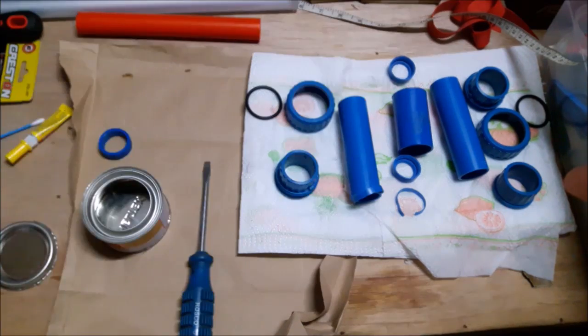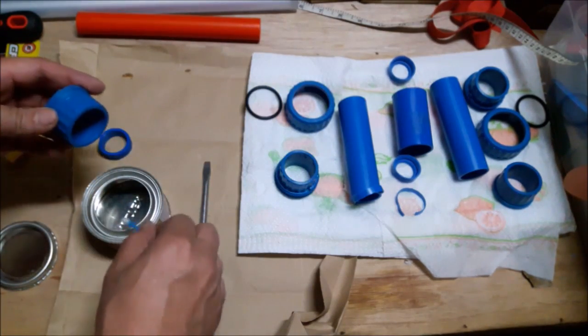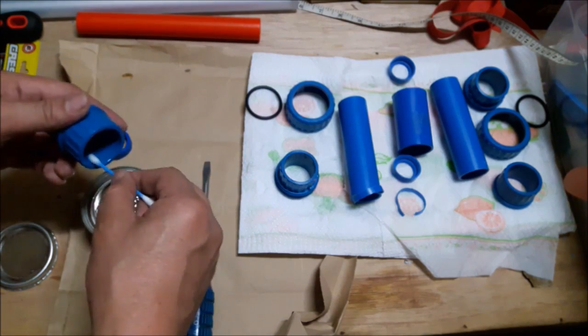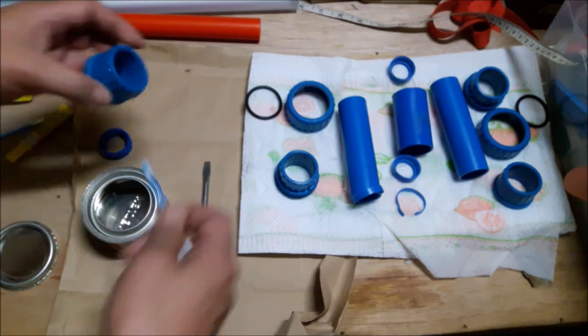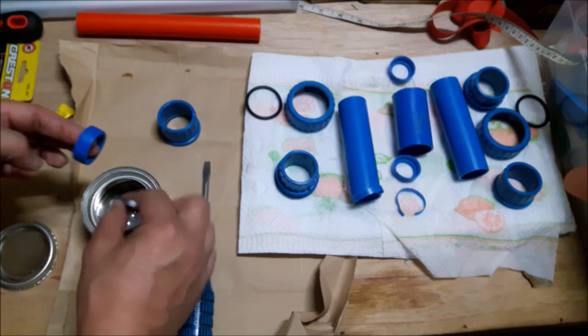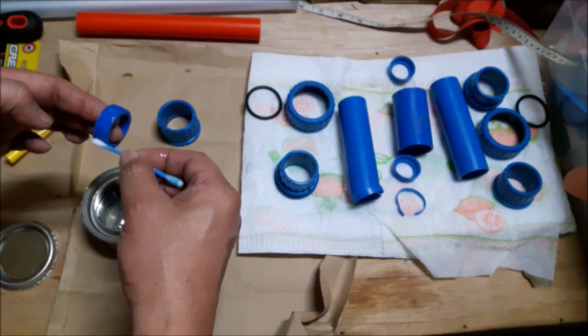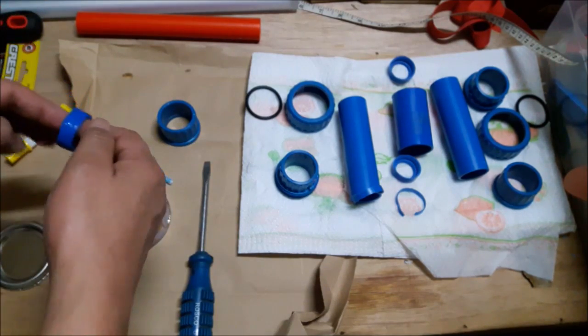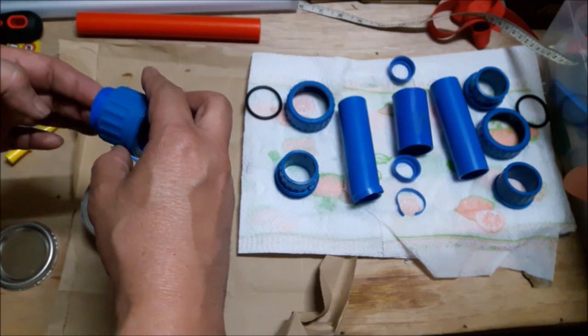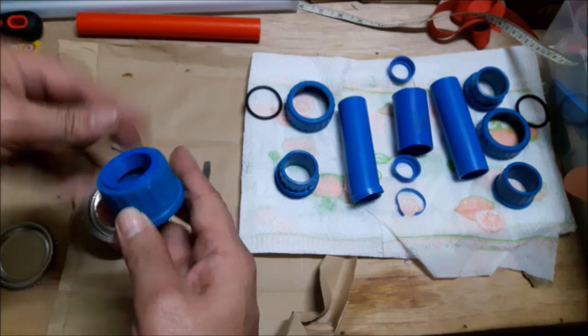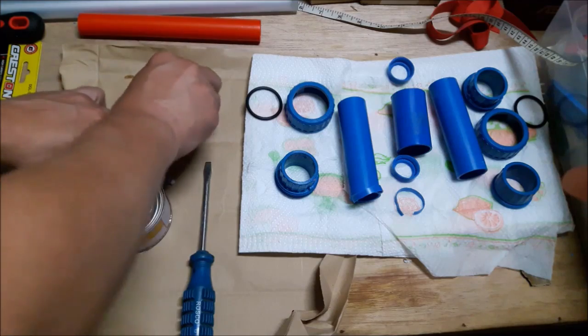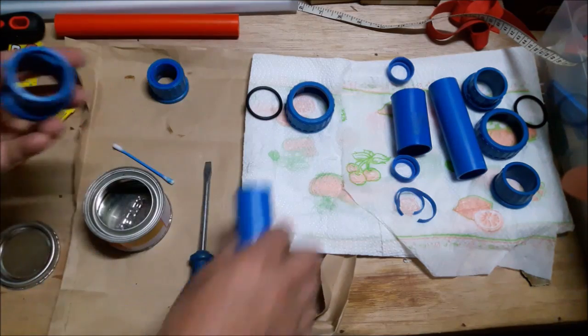So we'll be using PVC cement. Just follow the manufacturer's instructions. You're supposed to actually use a primer for this, but I couldn't find any, so I guess this will have to do. So you just put a very thin layer on both parts of the PVC pipe that you want to join, on both pieces. And then just slip them in place. There you go.